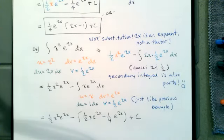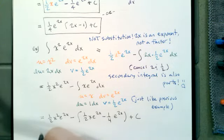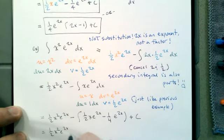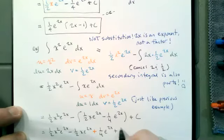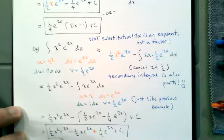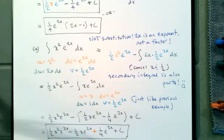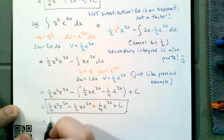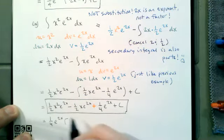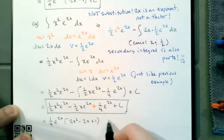Notice we have to subtract all the terms from before. Multiplying it out: that's minus one-half x e to the 2x, and then minus times minus gives plus one-fourth e to the 2x. So we can write this as one-half x squared e to the 2x minus one-half x e to the 2x plus one-fourth e to the 2x plus C. We can also factor out one-fourth e to the 2x, leaving 2x squared minus 2x plus 1, plus C.